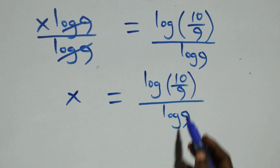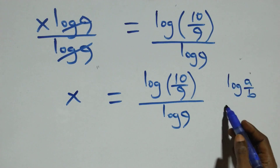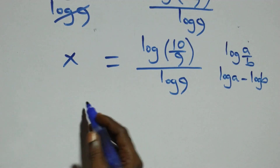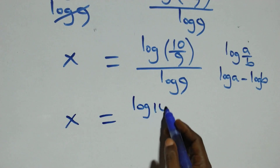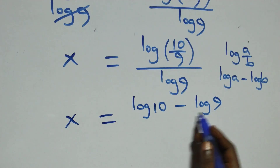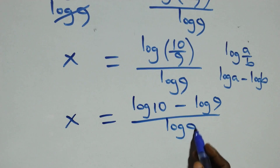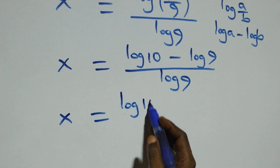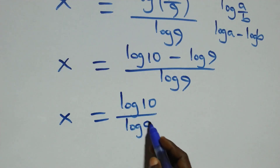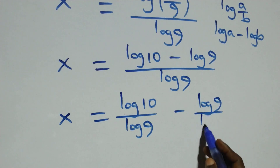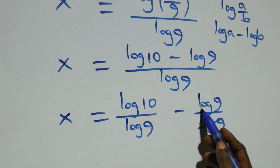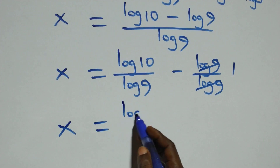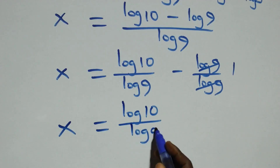This follows the log quotient rule: log of a over b is the same thing as log a minus log b. So we have x equals log 10 minus log 9, all over log 9. Then we separate this into two fractions: x equals log 10 over log 9 minus log 9 over log 9. Log 9 cancels with each other, leaving one.